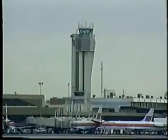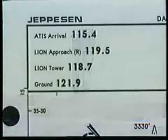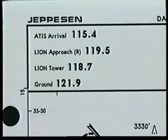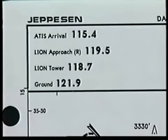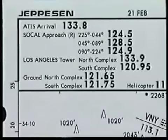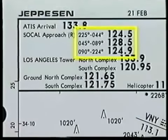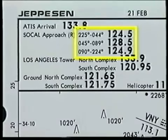Moving to the communications box, notice that the frequencies are listed in the normal sequence of use when arriving at an airport: ATIS, approach, tower, and then ground. At larger airports, separate frequencies may be used depending on the sector from which you're approaching.